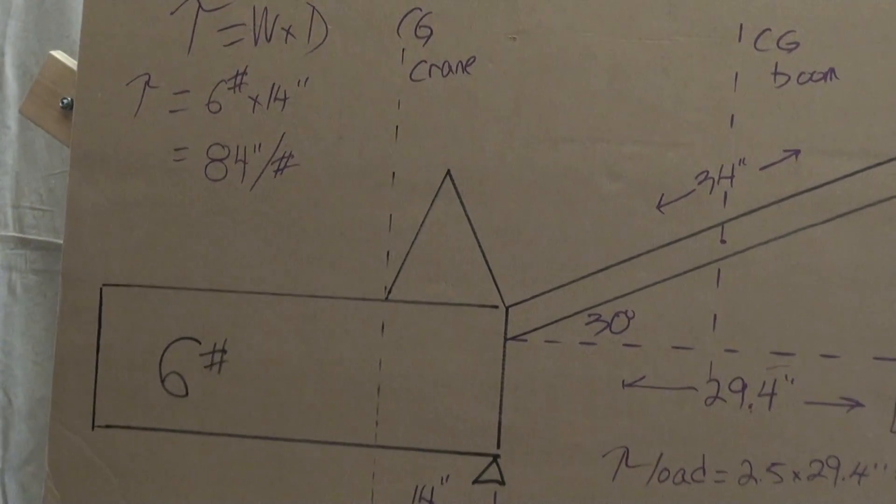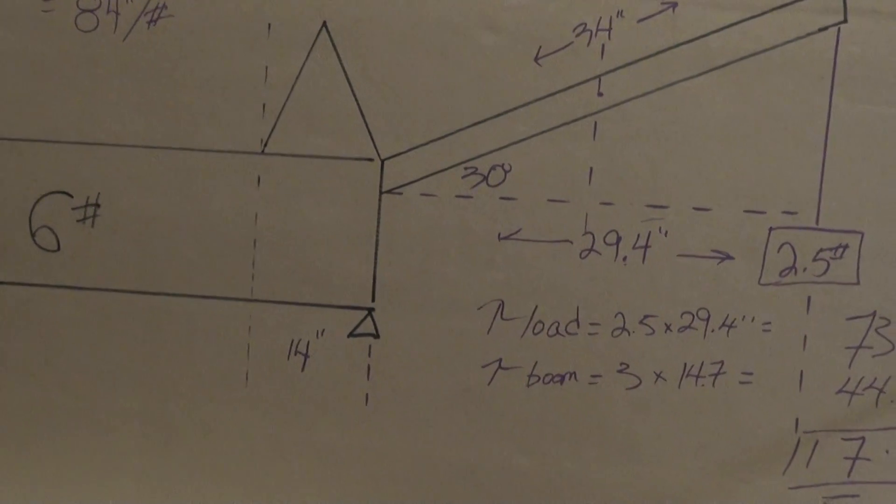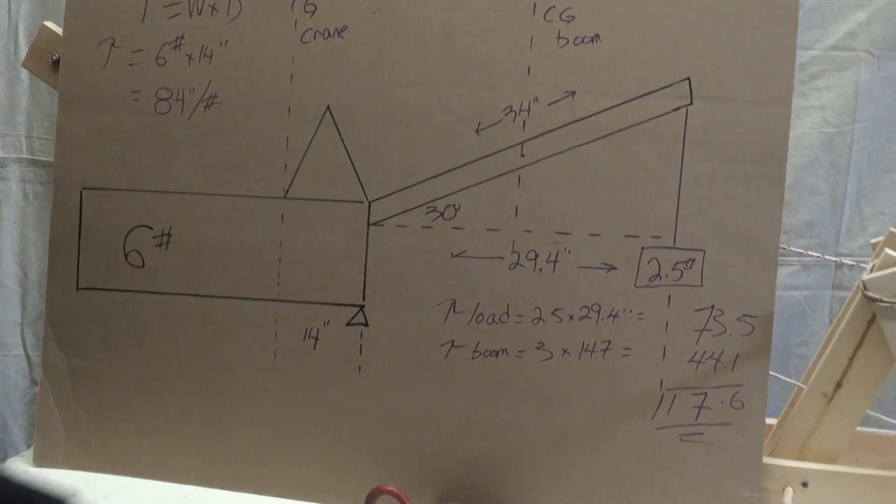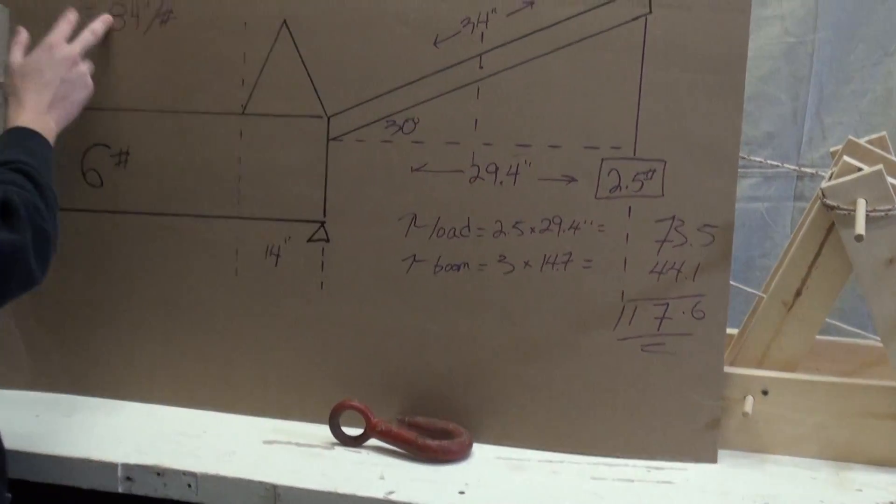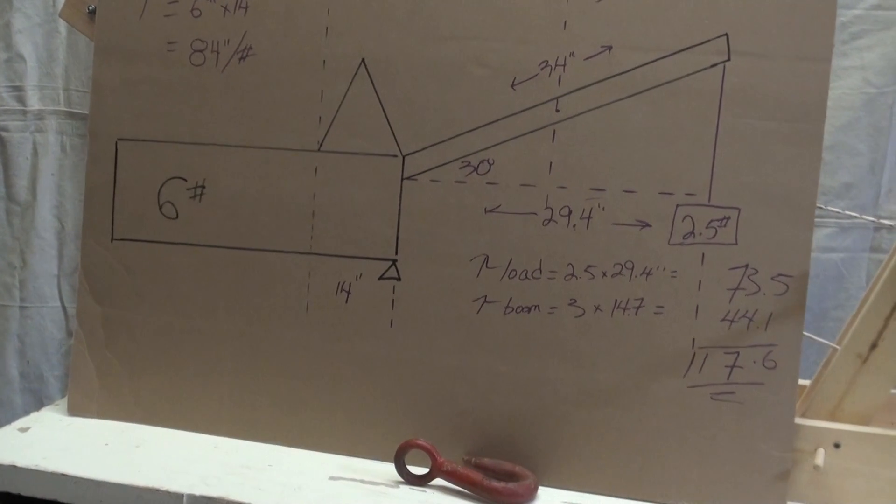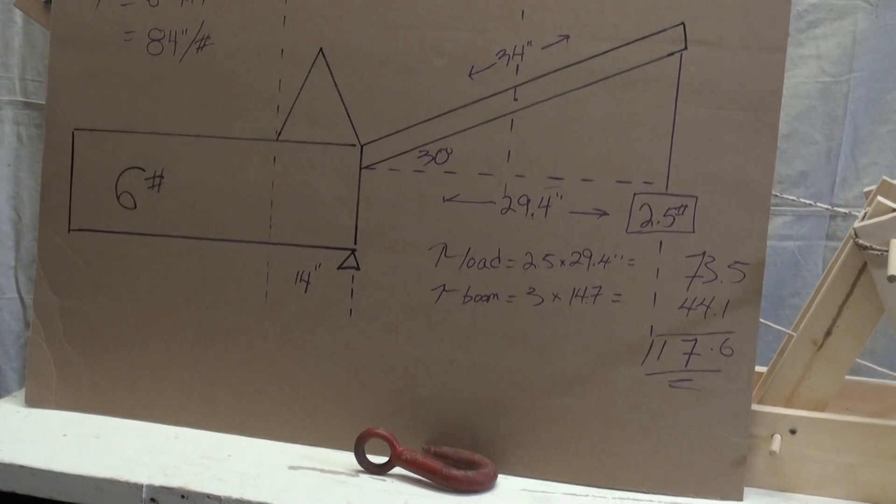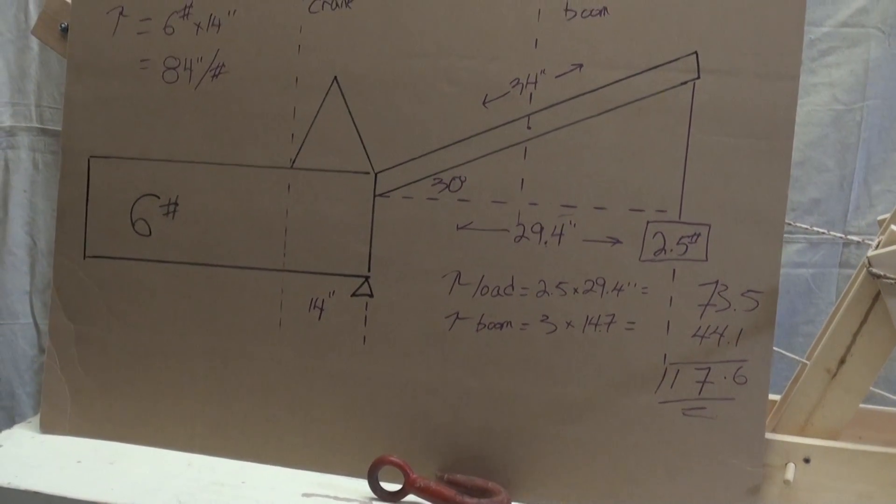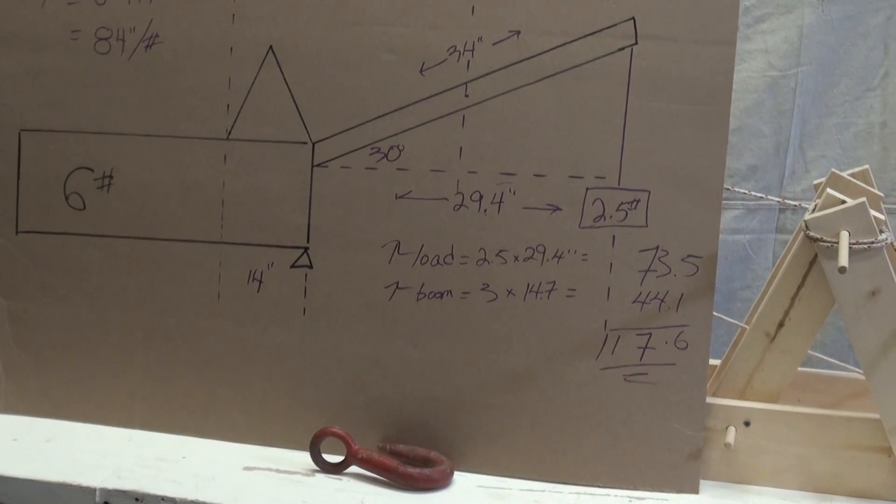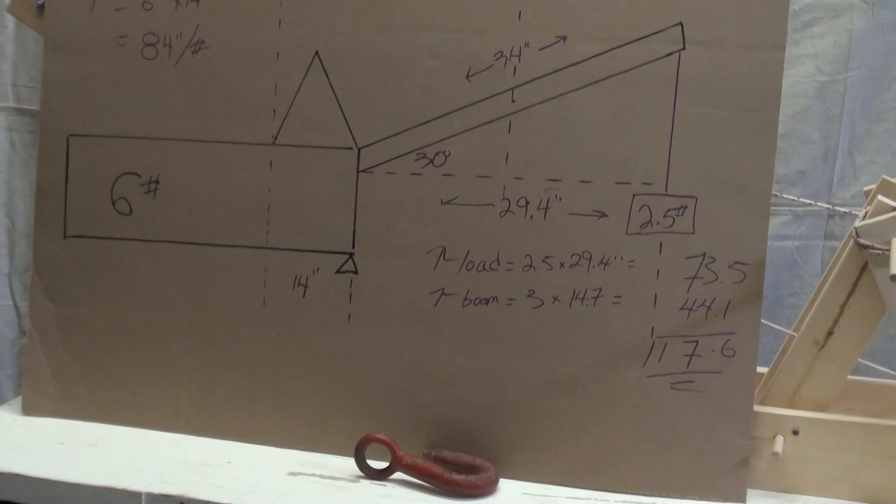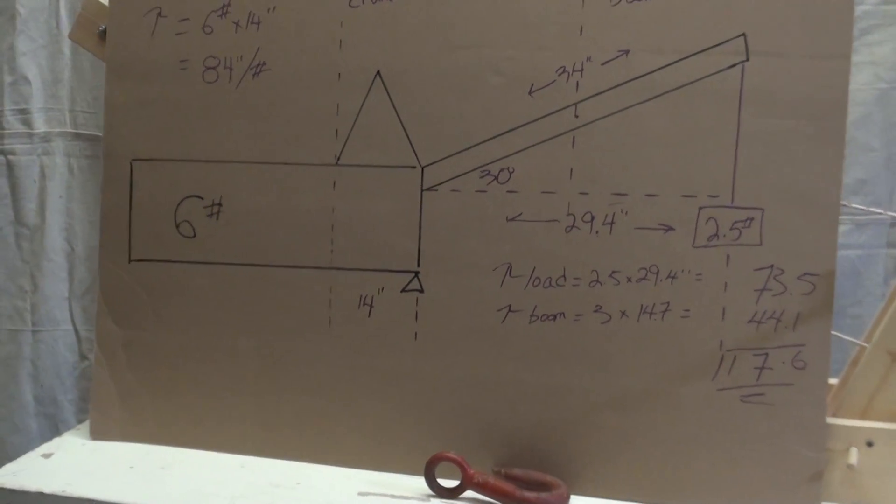So the difference is 33 inch pounds. The difference between our torque on the other side versus the crane body. So if we could add 33 inch pounds, not 33 pounds, 33 inch pounds, if we could add that to the crane body side, we'd be in balance.